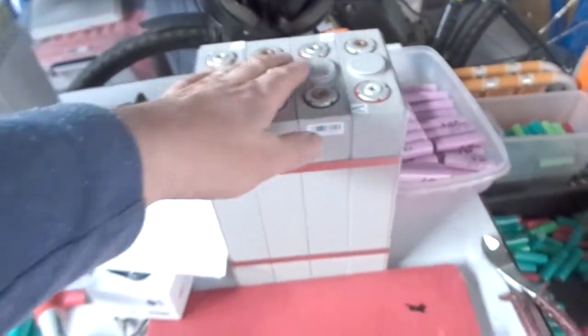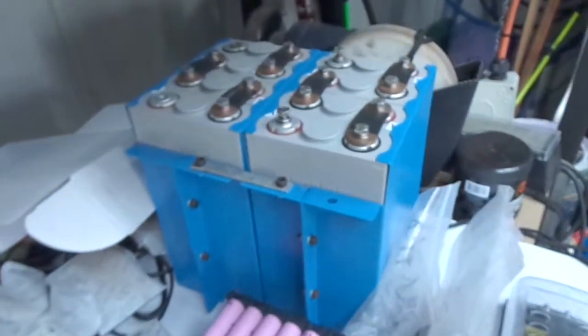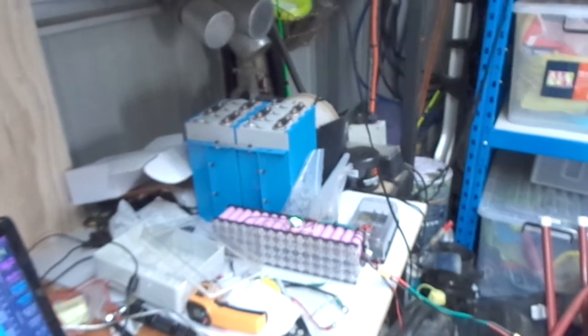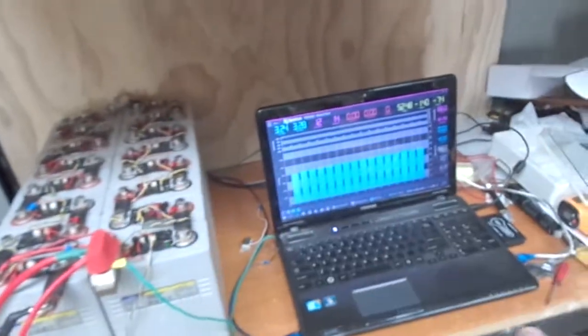These ones I've just taken the plastic wrapping off, I haven't even done anything with these, they're brand new. I've also got these two 4s packs here, so that makes 12 cells. Now if I have another four cells I can make another 16s 60 amp hour pack. That will give me one 100 amp hour 16s and two 60 amp hour packs.